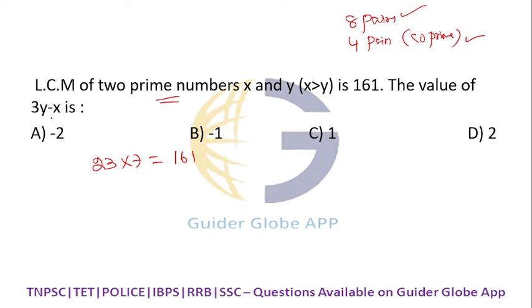Find the value of 3y minus x. X is the greater value, so X is 23 and Y is 7. Three Y, how much? 21. So 21 minus X: 3Y minus X is equal to 21 minus 23, that is minus 2. What is the answer? Answer is minus 2.